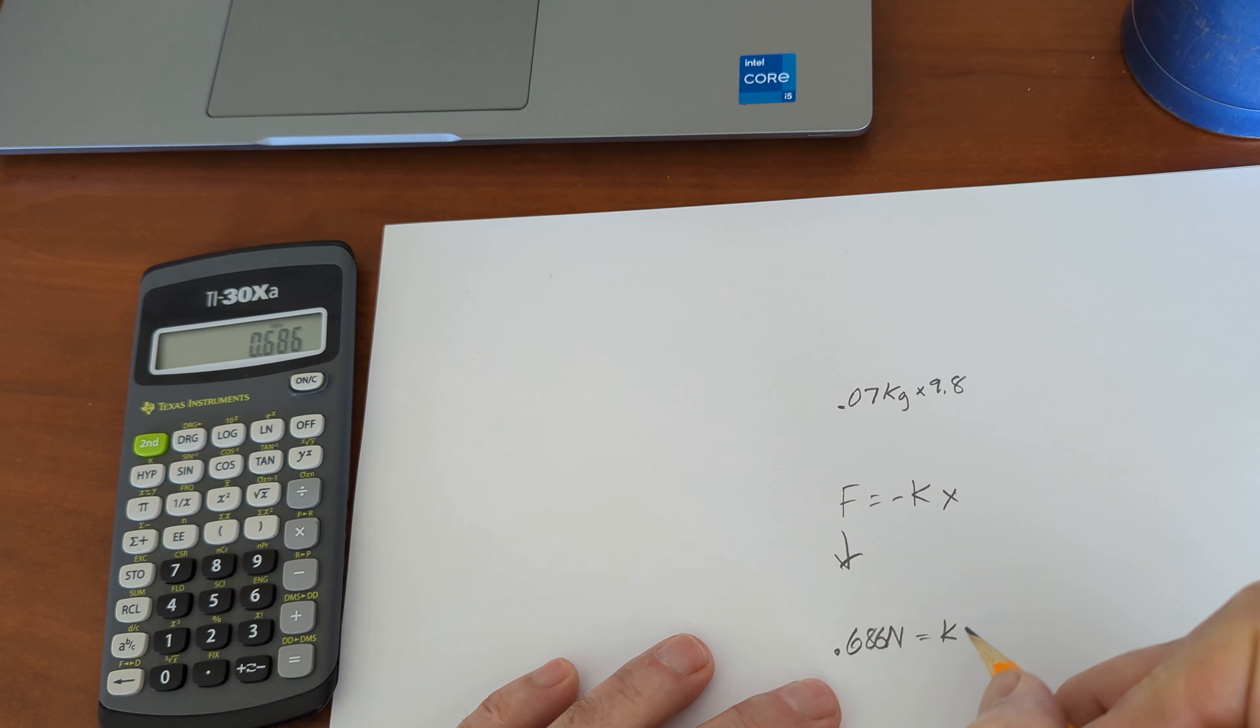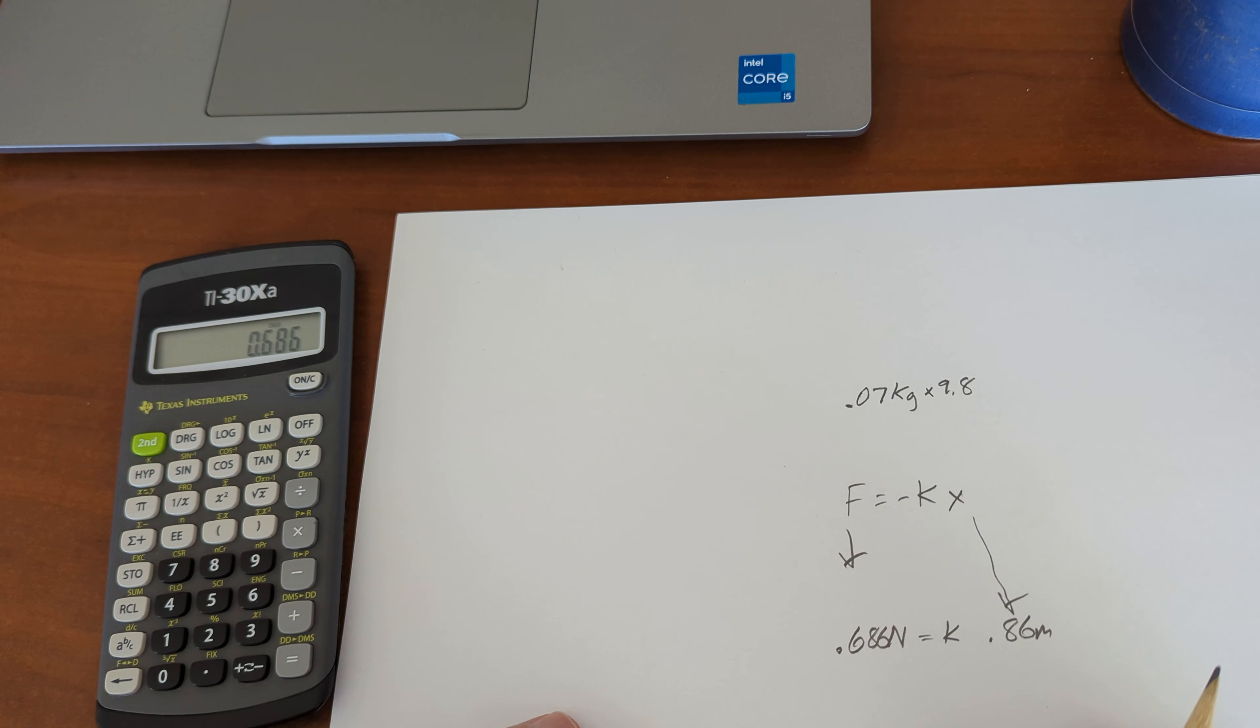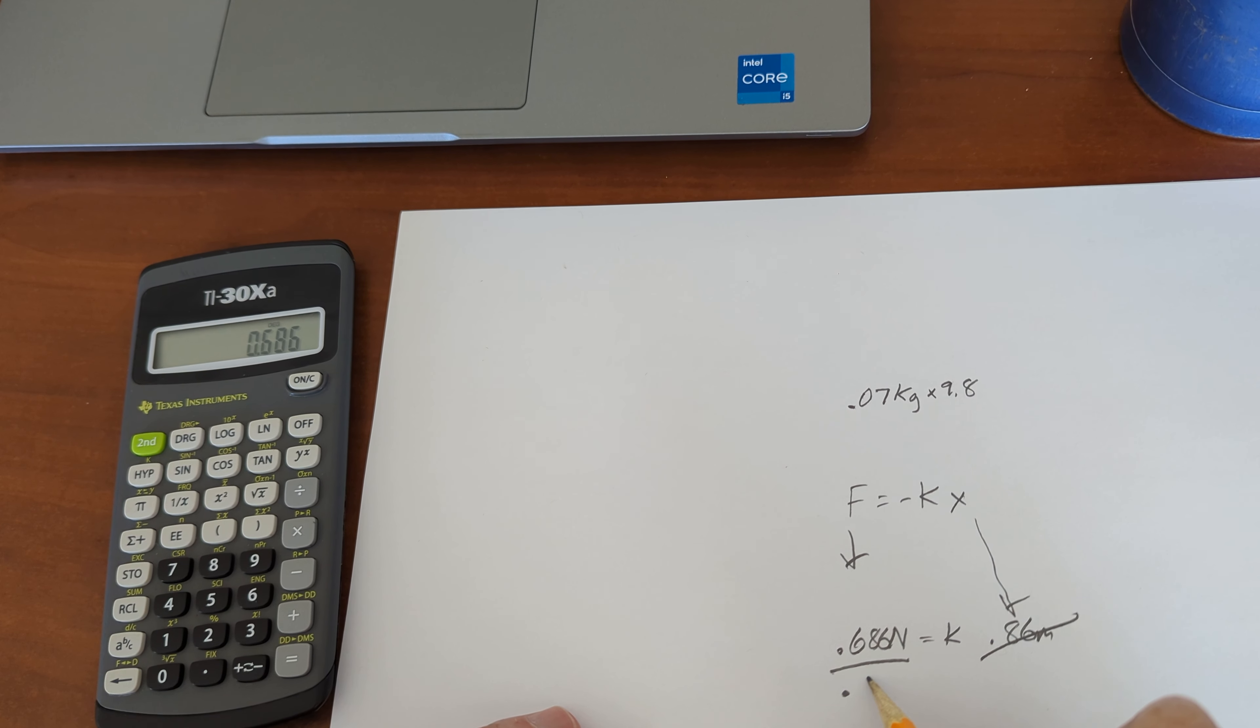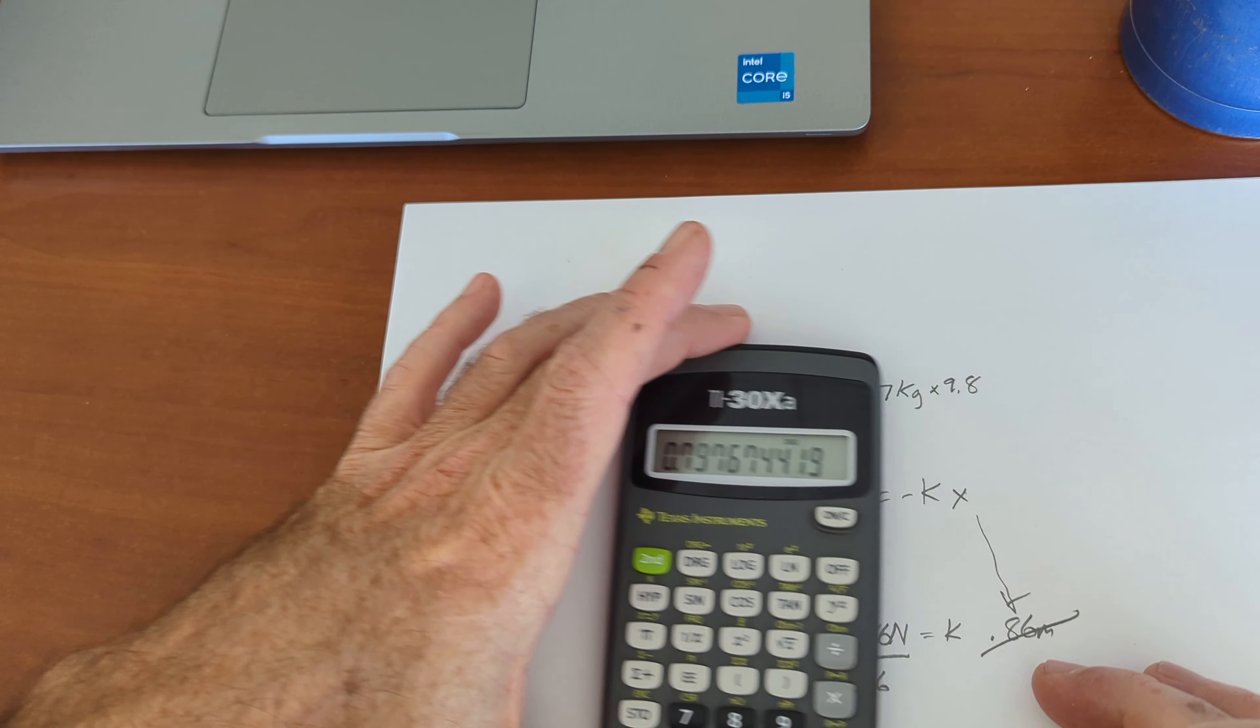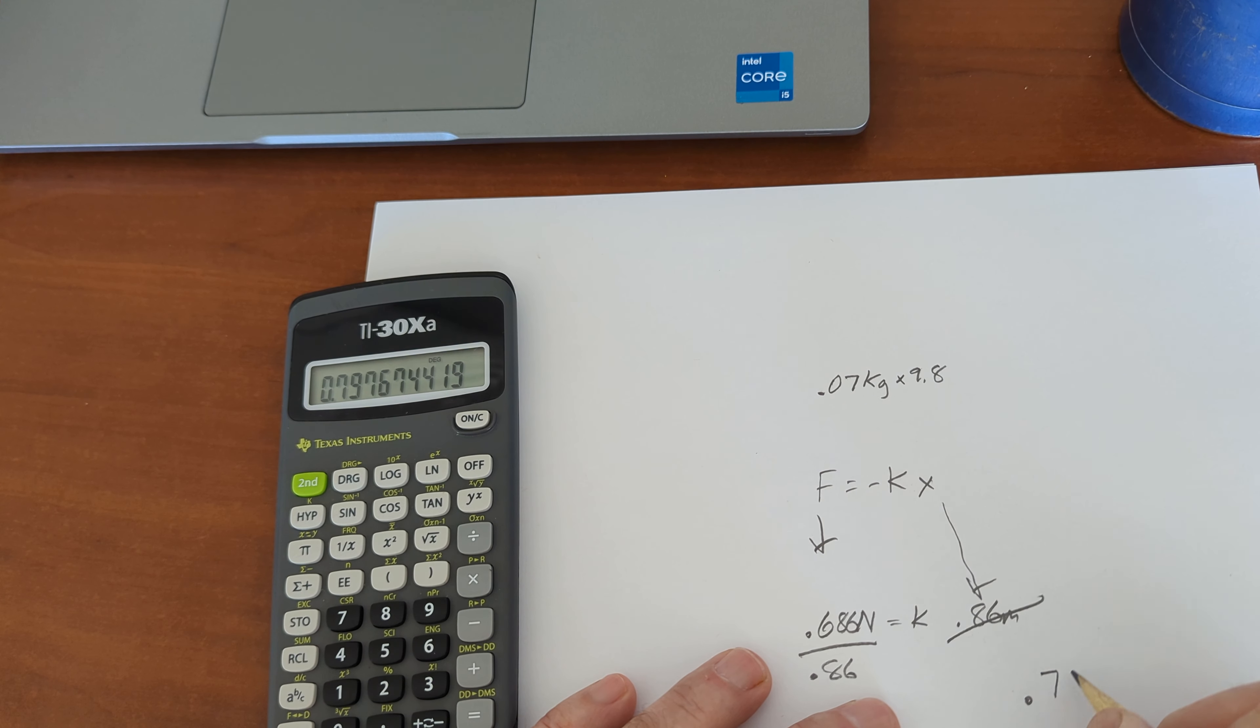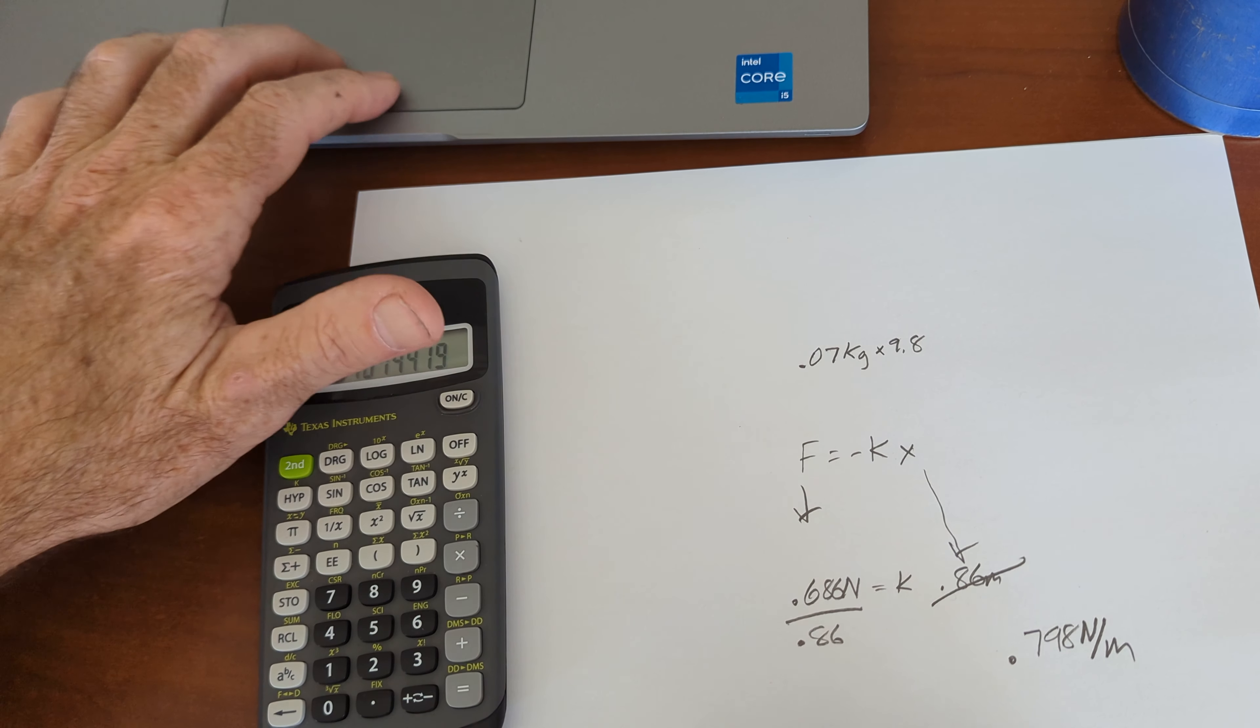And it is stretched 0.86 meters. That is the distance it's stretched. So, man, it's stretched a long way. This must be like a slinky. 0.686 divided by 0.86 gives me 0.797 or 0.798, rounded off, newtons per meter. That would be a really easy spring to pull.